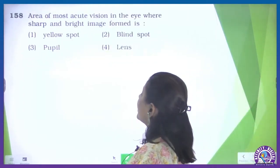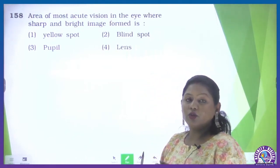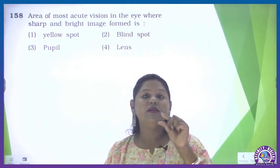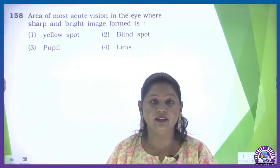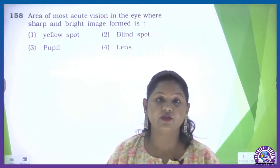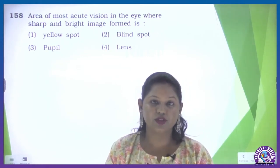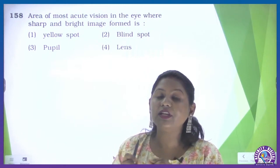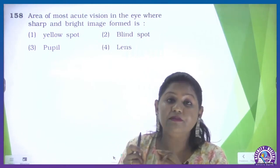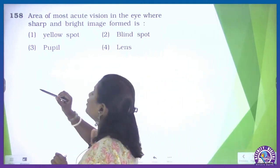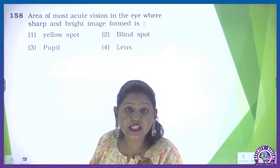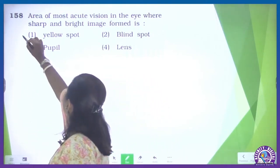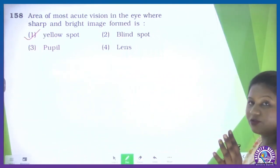Question 158: the area of most acute vision in the eye where a sharp and bright image is formed. Sharp vision is formed in the retinal part — specifically the macula lutea, with its central part known as the fovea centralis, where the retina is thinned out. Macula lutea is rich in cones, which are stimulated in bright light and produce a sharp image of high resolution. The word lutea is derived from lutein, a yellow-coloured pigment. So macula lutea is commonly known as the yellow spot — option one is correct.